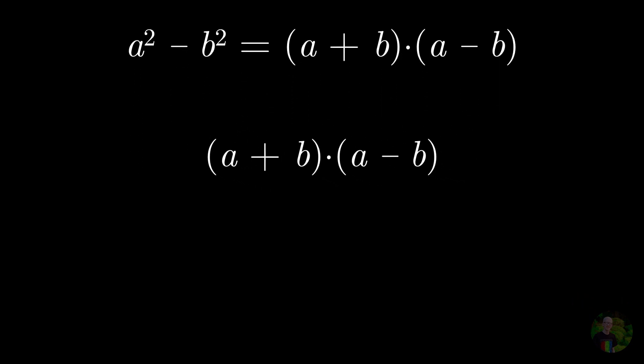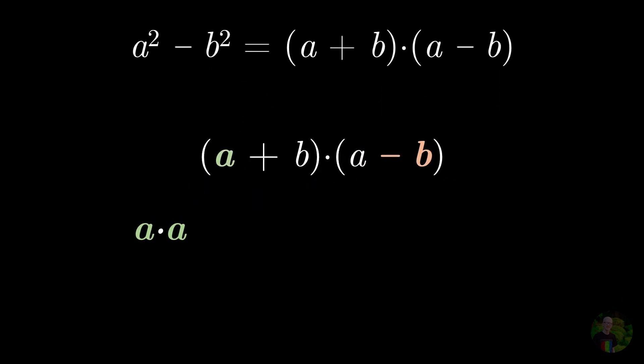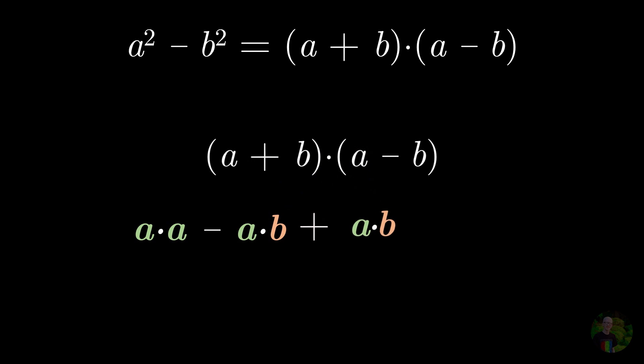Algebraically, we take the right hand side, we just distribute and multiply them one by one, the term in the middle gets cancelled out, and all of a sudden, we got a squared minus b squared.